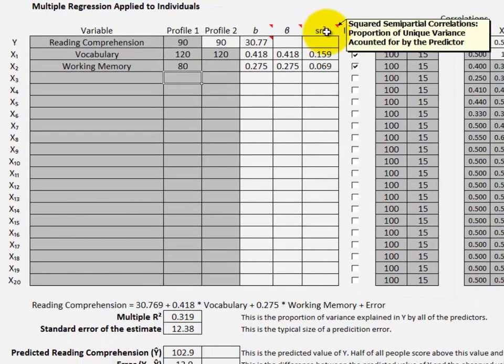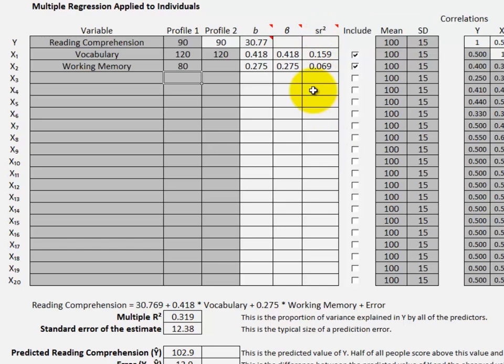You can see here the squared semi-partial correlation coefficient. It's the proportion of unique variance accounted for by the predictor. It equals the change in R-square in a hierarchical regression.